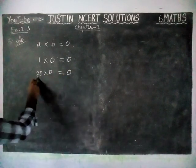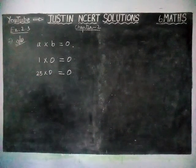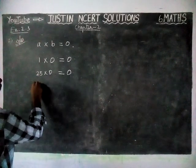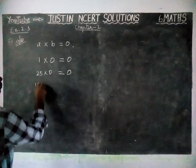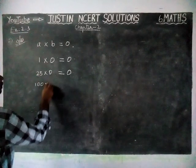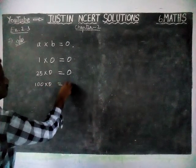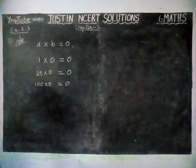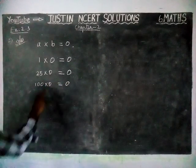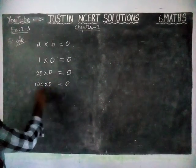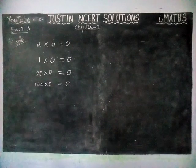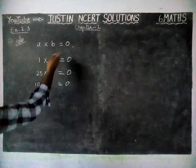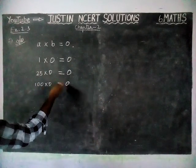0 multiplied with any number, we will get 0 only as answer. Next, if we take 100 also, 100 into 0 is equal to 0. 0 multiplied with any number, we will get 0 as answer. So, when we are multiplying with one 0, we will get the answer as 0.